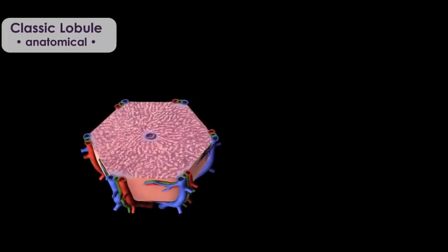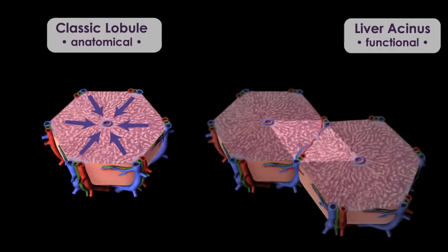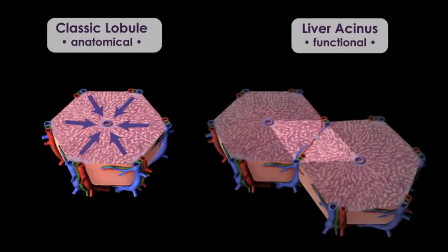To review: the liver lobule is the anatomical model. It is hexagonal in shape, involves one anatomical liver lobule, and blood flows from the periphery to the center. The liver acinus focuses on function. It is diamond or oval shaped, involves two adjacent anatomical liver lobules, and blood flows from the middle, which we discuss as the short axis, to the periphery.